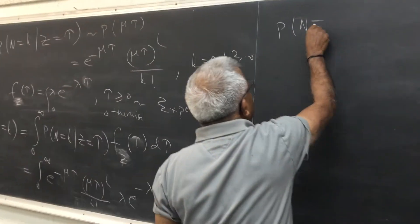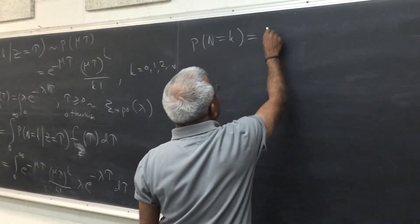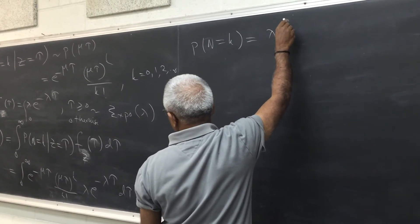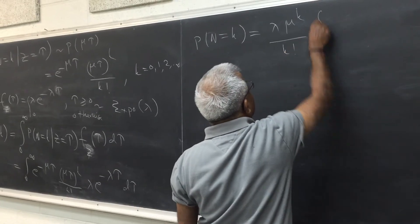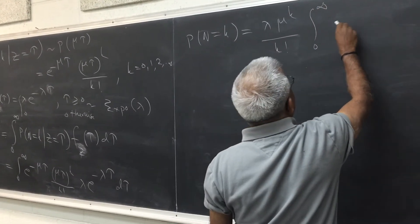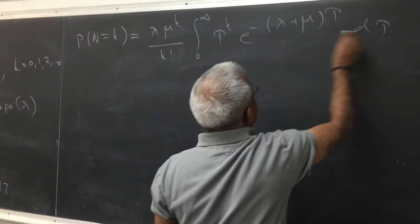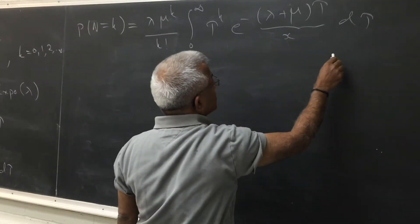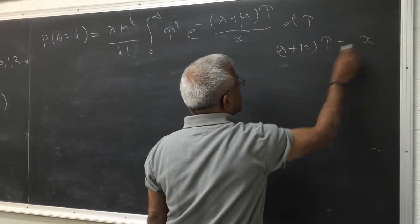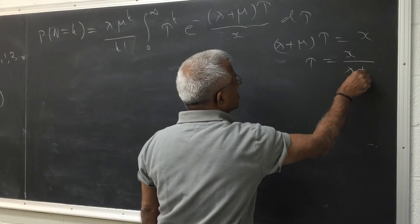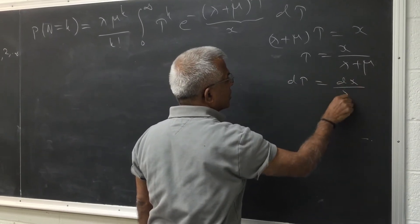So let me substitute this to be a function. So if I collect all the terms outside, this becomes probability of n equal to k is lambda mu to the power k. And then you have k factorial 0 to infinity tau to the power k e raised to minus lambda plus mu to the power tau d tau. So let me substitute this to be x. So I am substituting lambda plus mu multiplied by tau to be x. So tau is of course x over lambda plus mu. And d tau will be dx over lambda plus mu.